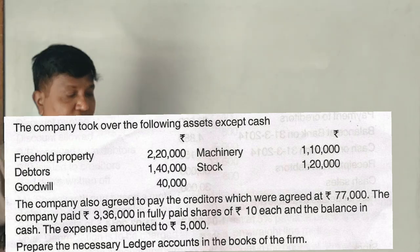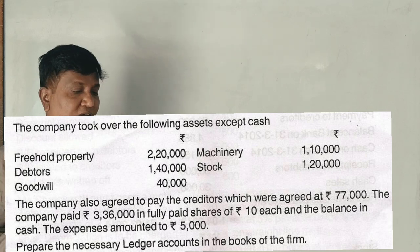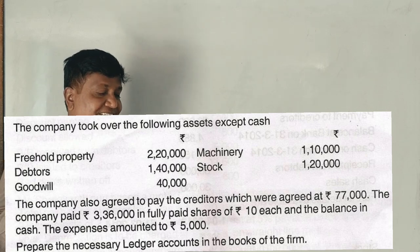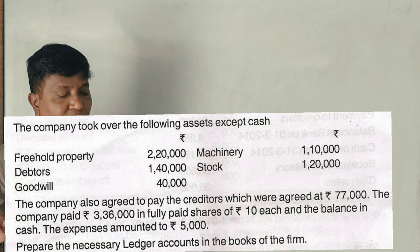The company also agreed to pay creditors worth 77,000. The company paid 3 lakh 36,000 in fully paid shares of 10 rupees each, and the balance in cash. The expenses amounted to 5,000 rupees. Prepare necessary ledger accounts in the books of the firm.